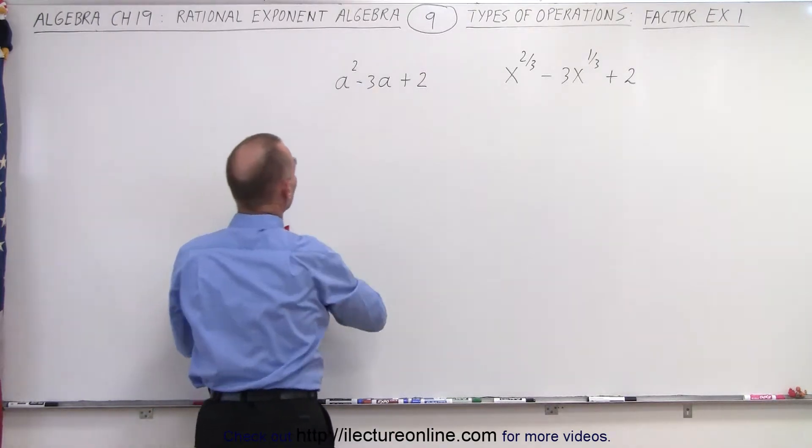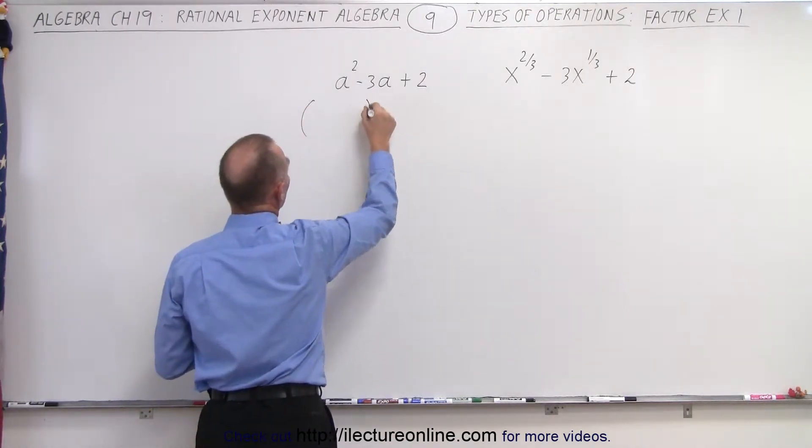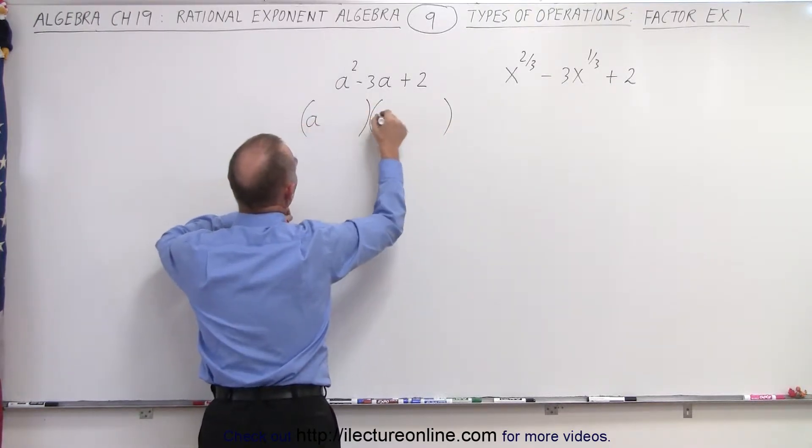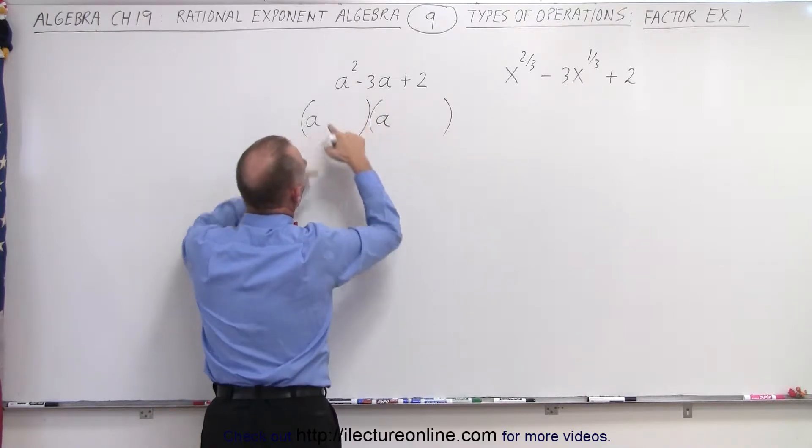So this can be factored by writing this as the product of two binomials. Notice that the first two terms right here need to be an a and an a because a times a gives us a squared.